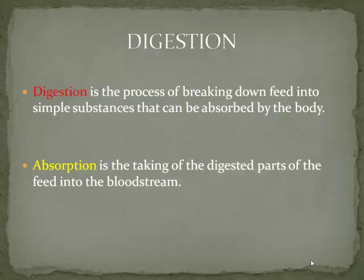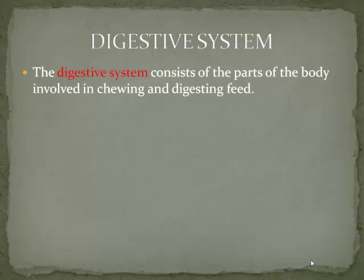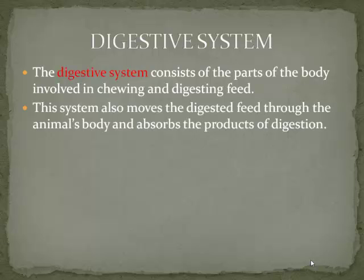What is absorption? Absorption is the taking of the digestive parts of the food and absorbing it into the bloodstream. The digestive system consists of the parts of the body involved in chewing and digesting food.